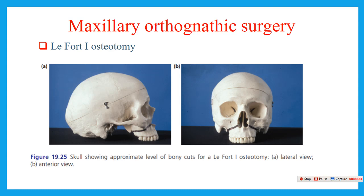First, I will talk about maxillary orthognathic surgery. The most common and most popular surgical procedure in maxillary orthognathic surgery is the LeFort I osteotomy. As seen in this picture, this is the LeFort I osteotomy — cutting from one pterygoid area to another on the other side. This surgical procedure is used to move the maxilla in any direction: anterior, forward, backward, and also superior and inferior. Most commonly used for forward movement of the maxilla.